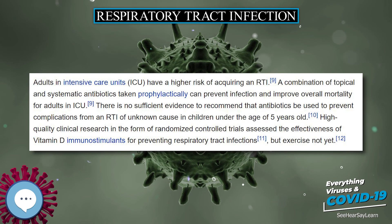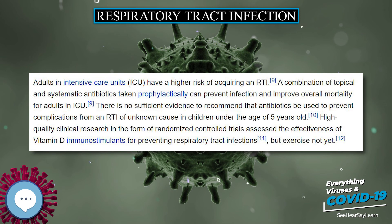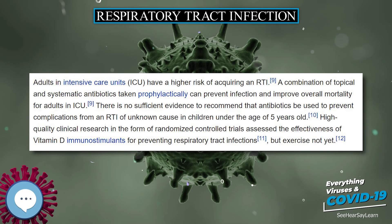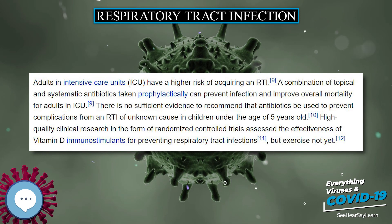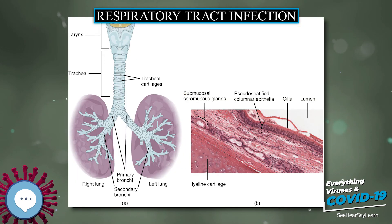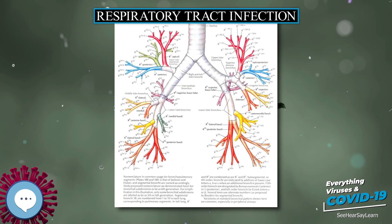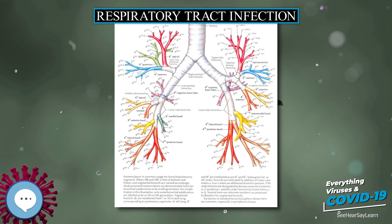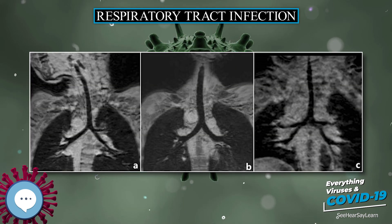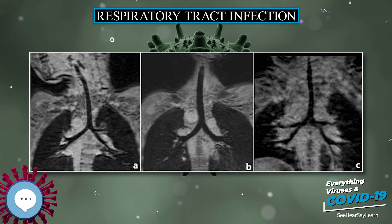There is no sufficient evidence to recommend that antibiotics be used to prevent complications from an RTI of unknown cause in children under the age of 5 years old. Further high-quality clinical research in the form of randomized controlled trials is necessary to assess the effectiveness of immunostimulants and exercise for preventing respiratory tract infections.